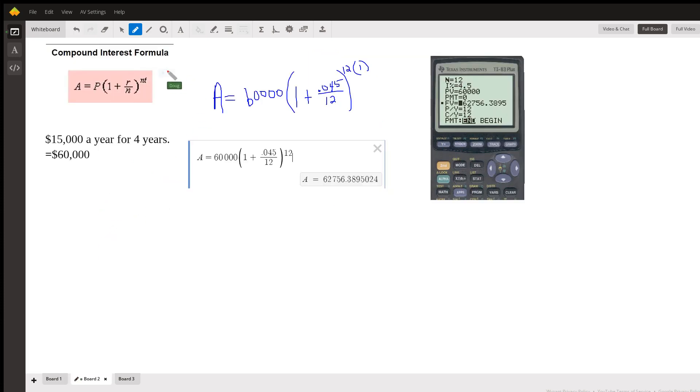So here on board two, here's this $60,000, and here's the compound interest formula where P is the original principal, r is the interest rate represented as a decimal, n is the number of compounding periods, and t is the number of years. So if I substitute in the numbers that we know, this is what it looks like.